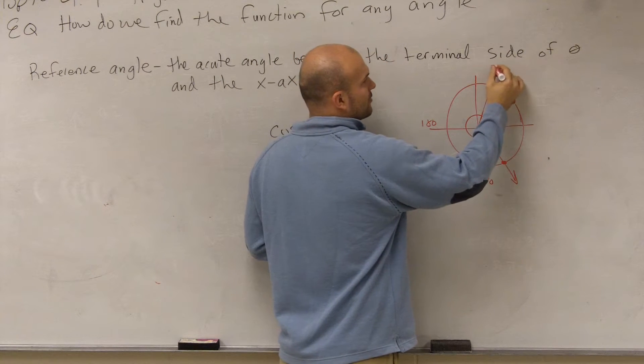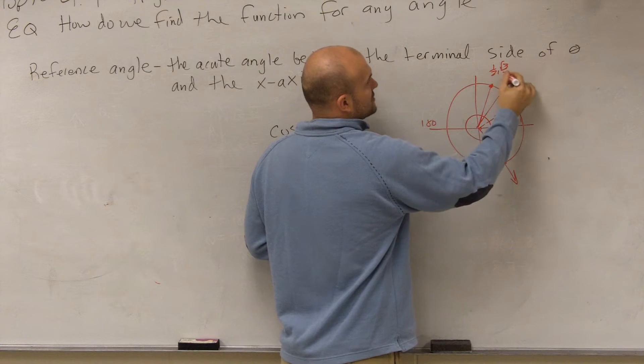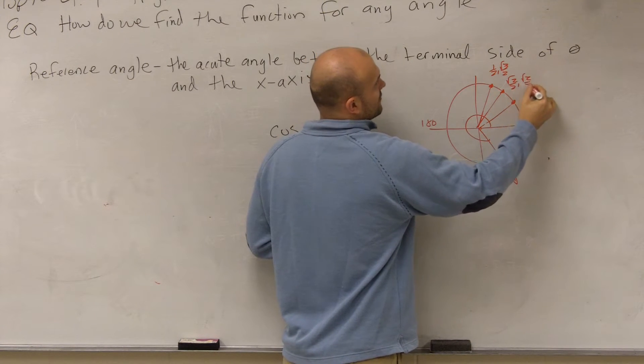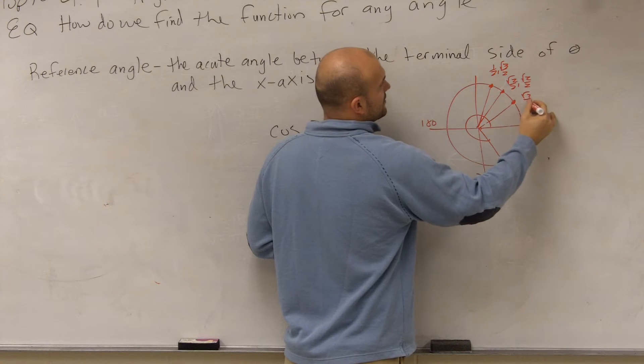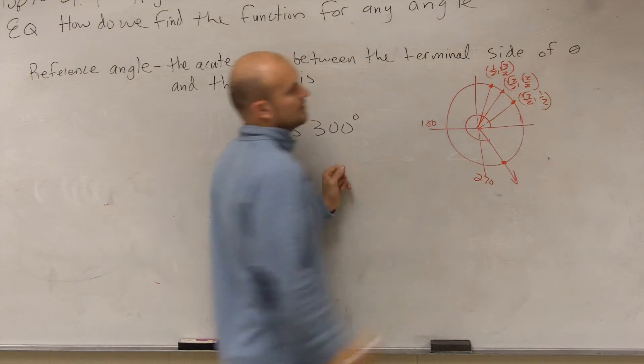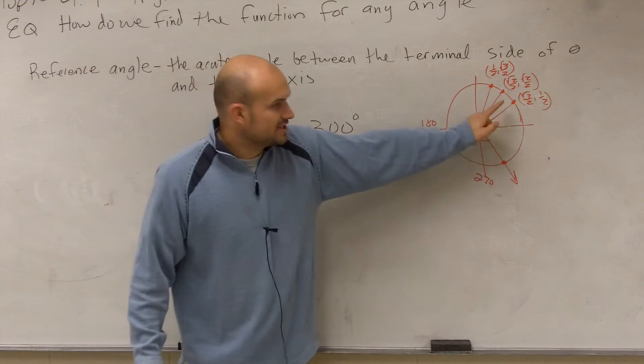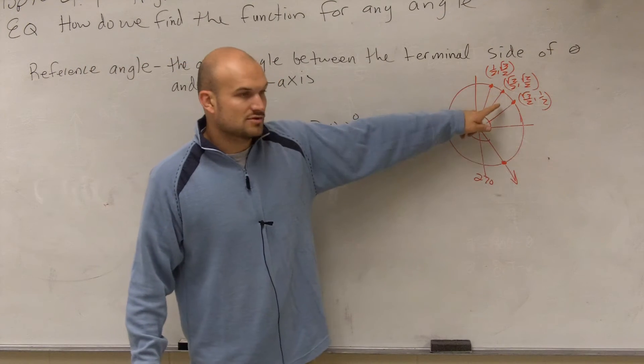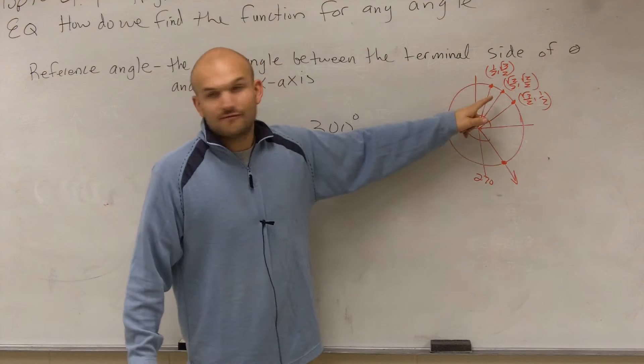We had this point, which is 1 half, square root of 3 over 2, square root of 2 over 2 comma square root of 2 over 2. And then here we had square root of 3 over 2 comma 1 half. You had three points, where this was the point for 30 degrees, this was the point for 45 degrees, and then for 60 degrees.